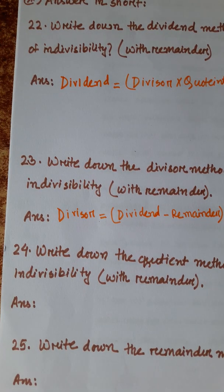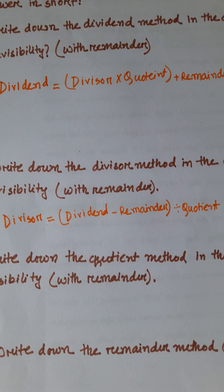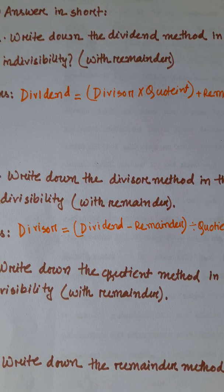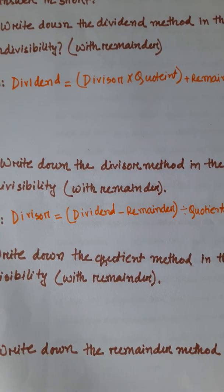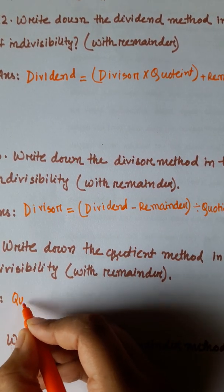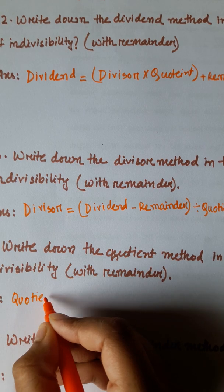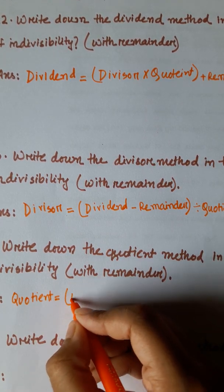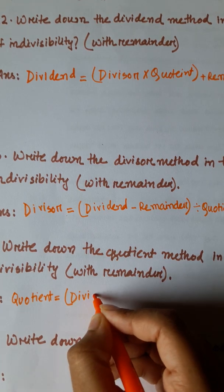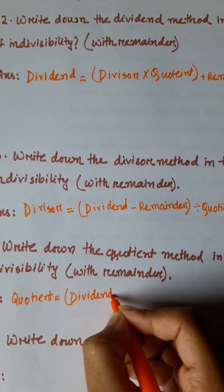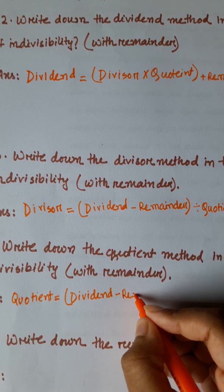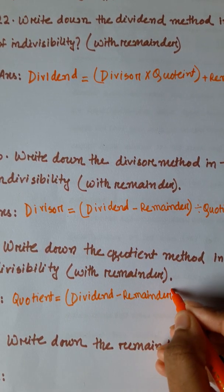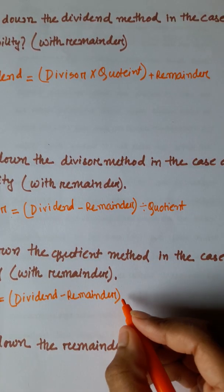Number 24: write down the quotient method in the case of indivisibility with remainder. Quotient is equal to dividend minus remainder, divided by divisor.